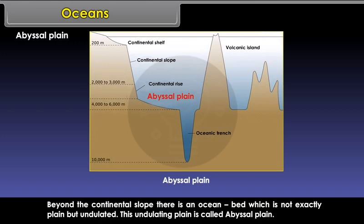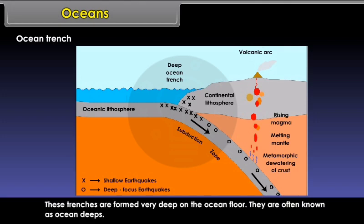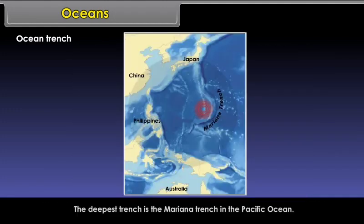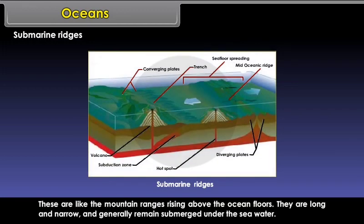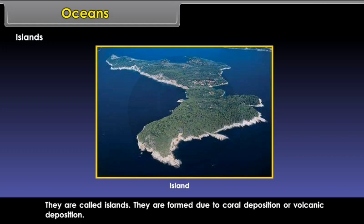Ocean Trenches are believed to be formed due to faulting on the ocean floor. These trenches are very deep and are often known as ocean deeps. The deepest trench is the Mariana Trench in the Pacific Ocean. Submarine Ridges are like mountain ranges rising above the ocean floor — they are long, narrow, and generally remain submerged under sea water. Islands are small land masses that rise above the surface of ocean water due to constant deposition on the ocean floor. They are formed due to coral or volcanic deposition.